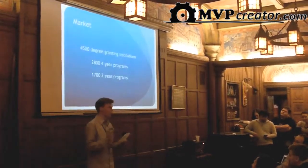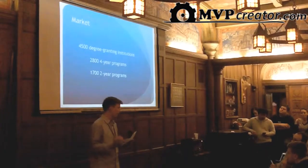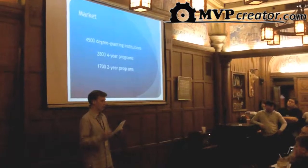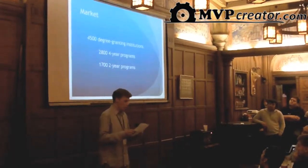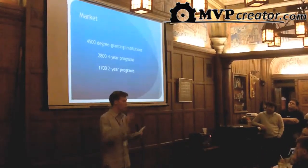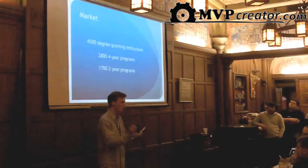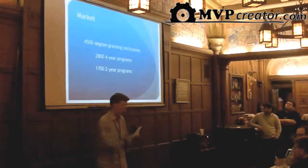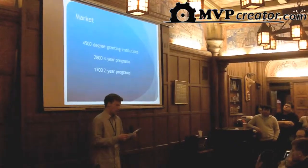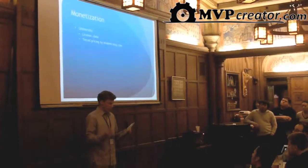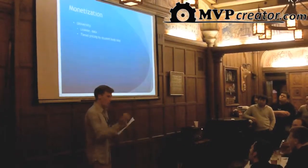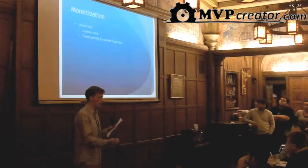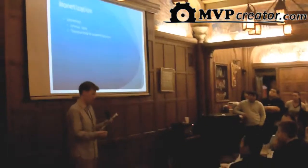Our market consists of 4,500 degree-granting institutions in the United States alone. Two main software entities cater to these groups: PeopleSoft is one, the other is Banner. We know that PeopleSoft has been adding 200 customers a year, and schools are shelling out a lot of money for this. We are not trying to reinvent the wheel — we are trying to change one module of this system to make it easier for the student, because we know it's frustrating and complicated for them.